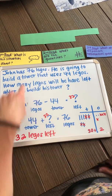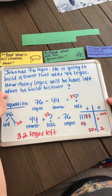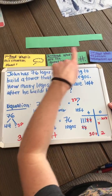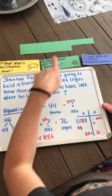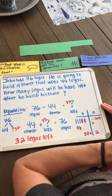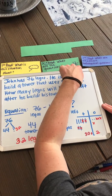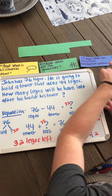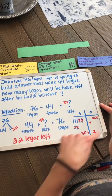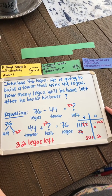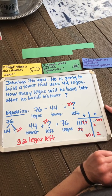Today you are going to solve addition and subtraction story problems. I want you to practice reading the problem three different times, looking for three different things: what the situation is about, the quantities in the situation, and the questions that could be asked. Then I want you to solve the situation with an equation and find the answer.